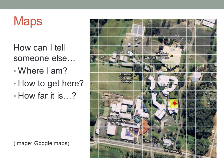Any particular square on the map is labelled by the easting and northing at its bottom left corner. The label of the square is the bottom left corner.